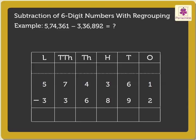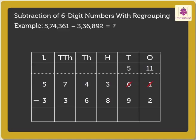Always start from the ones column and move left. Subtract the ones, i.e., 1 minus 2. As there are not enough ones, regroup the 6 tens and 1 as 5 tens and 11 ones. Therefore, 11 minus 2 gives 9.